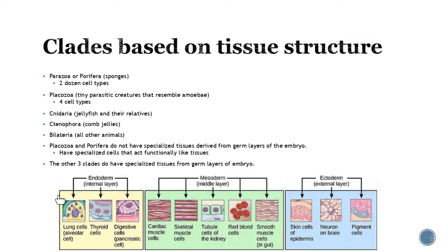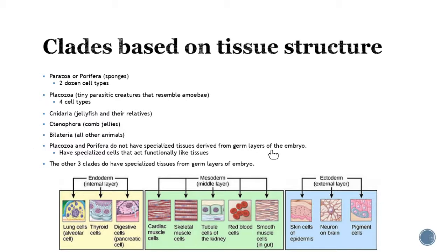The ectoderm gives rise to the epidermis and neurons. Depending on the type of organism, there are different types of tissue structures. For the very simple ones — like sponges — there are only about two dozen cell types. The Placozoa are tiny sea creatures that look like amoebas and only have four cell types. Cnidarians and their relatives have unique tissue types needed for survival. Some organisms use all three germ layers; others do not, depending on their complexity.